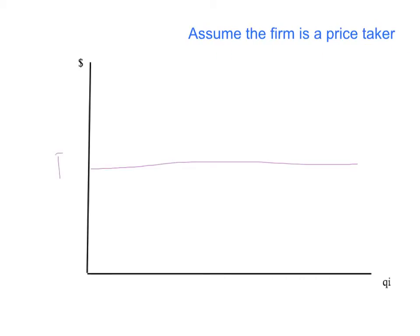Here is the market price faced by our firm — it's a horizontal line. But we know more than that. For a price-taking firm, not only is the price a horizontal line, but the price is also marginal revenue. So this horizontal line is also the marginal revenue curve. Why? Every time the firm wants to sell another unit, it can do so at the market price — it takes that price as given and can sell as much or as little as it wants at price P. So price and marginal revenue are the same thing.